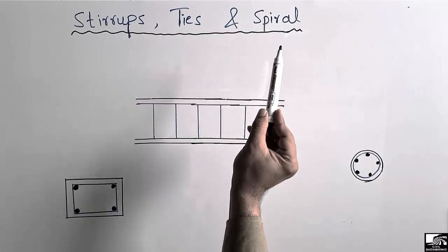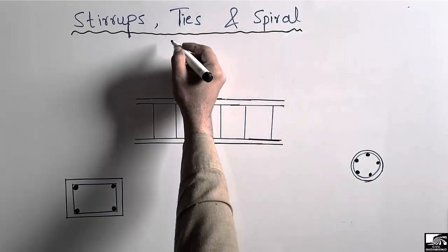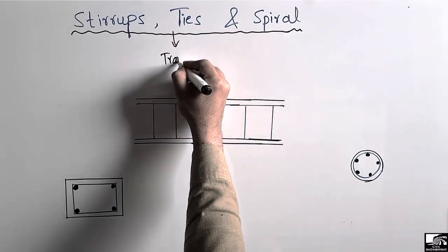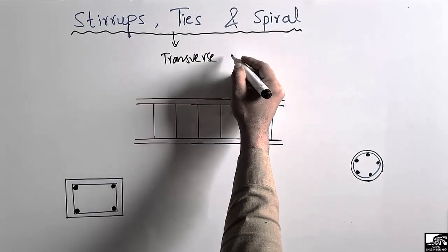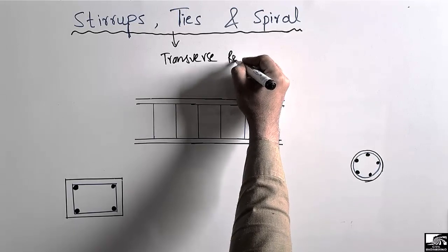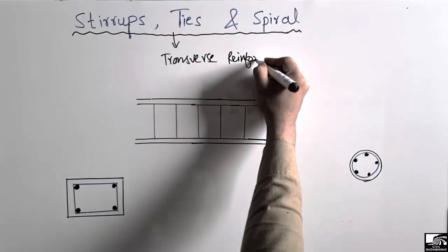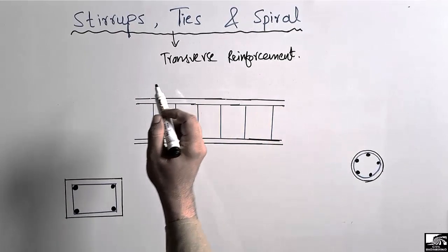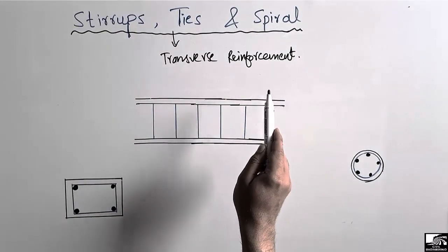These three types of reinforcement are known as transverse reinforcement. There are two main types of reinforcement in construction: longitudinal reinforcement and transverse reinforcement. These three technical terms all come under the category of transverse reinforcement.